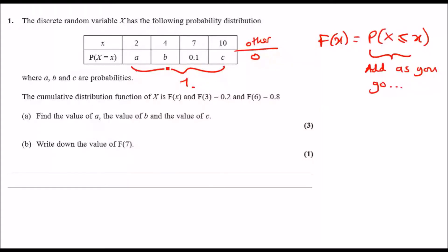Now the cumulative distribution function of X is F(x). Cumulative means that you add the probabilities as you go along. For example, if they told you to find the function at 4, this means you add all the known probabilities up to 4, so a plus b.